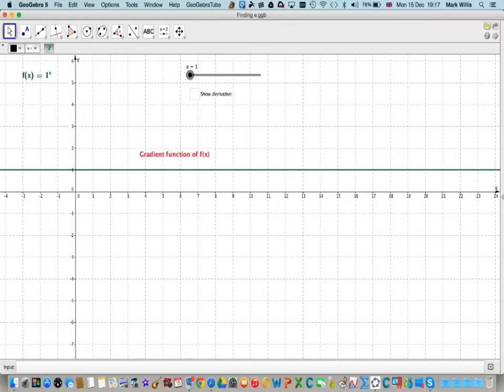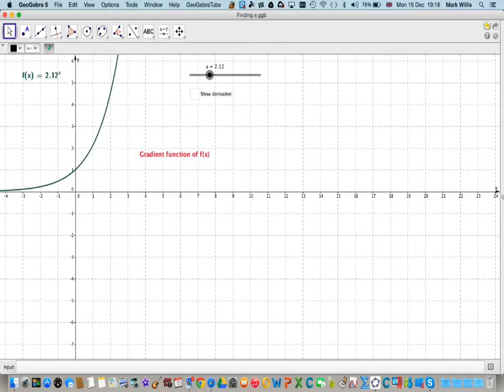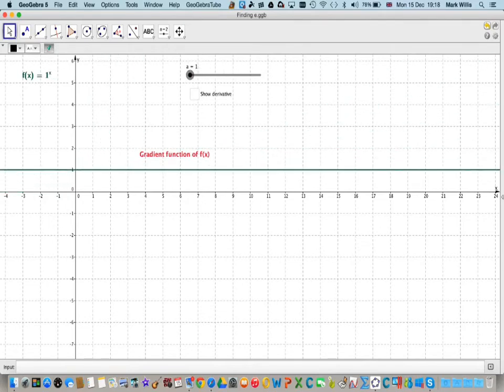Here I have a file that I created in GeoGebra. We have the function f of x equal to 1 to the x, and I've got a equal to 1 at the moment. So I can change the function by having a slider. I'm changing it for different values of a. Obviously, the bigger value of a, it becomes steeper. If I click this one here, it will show the gradient function.